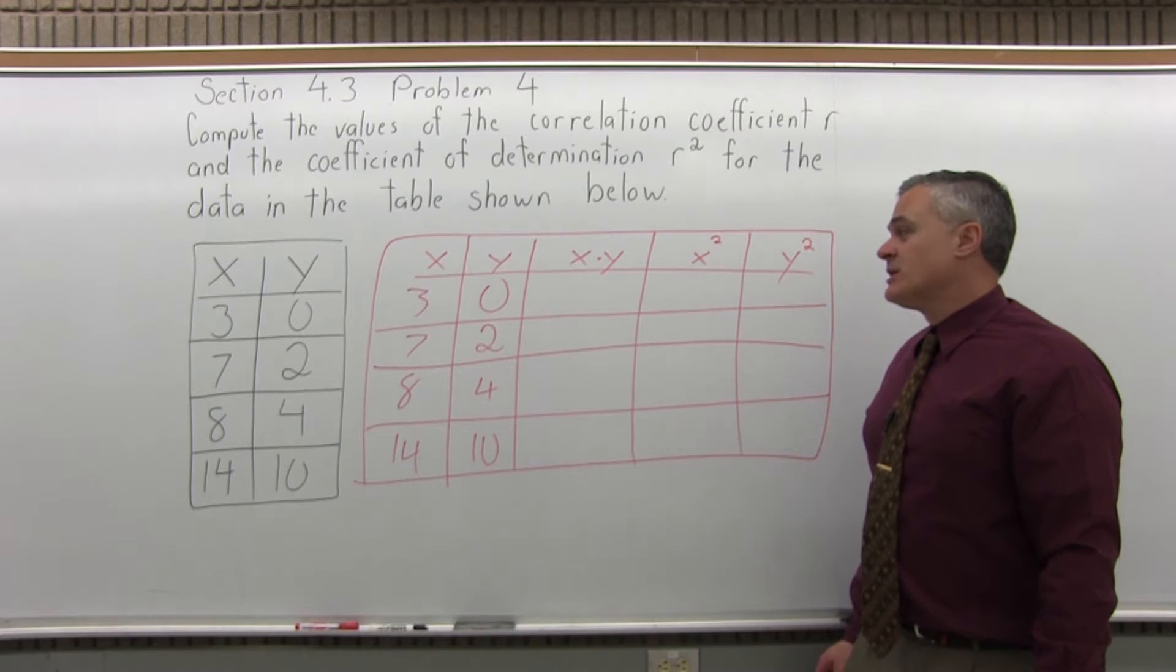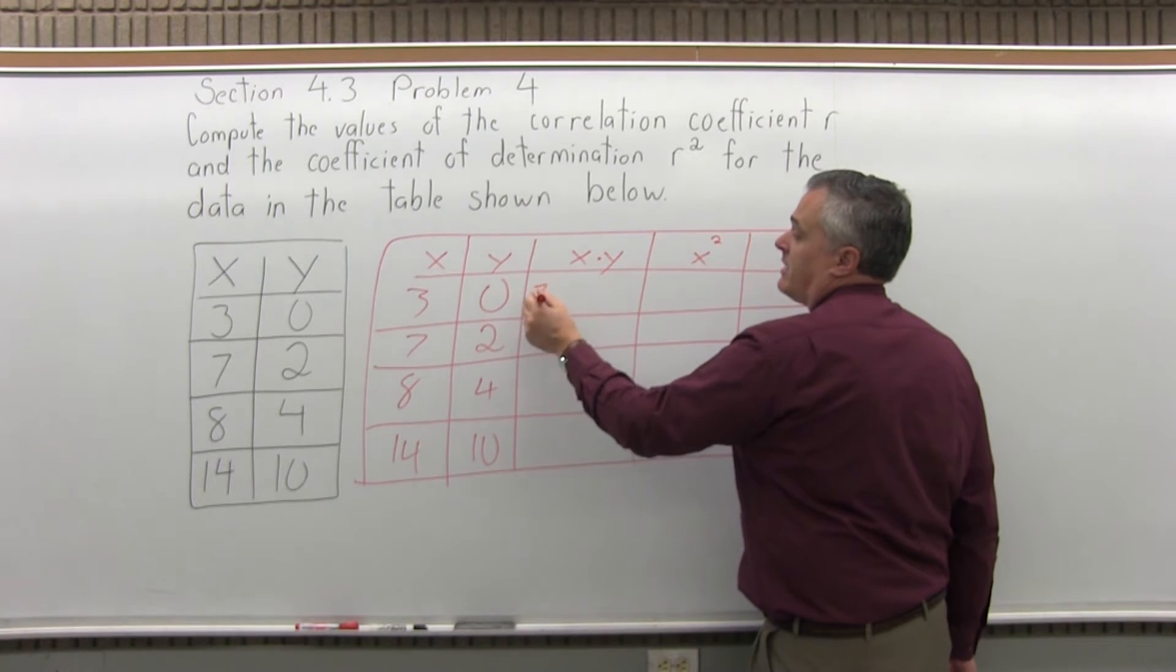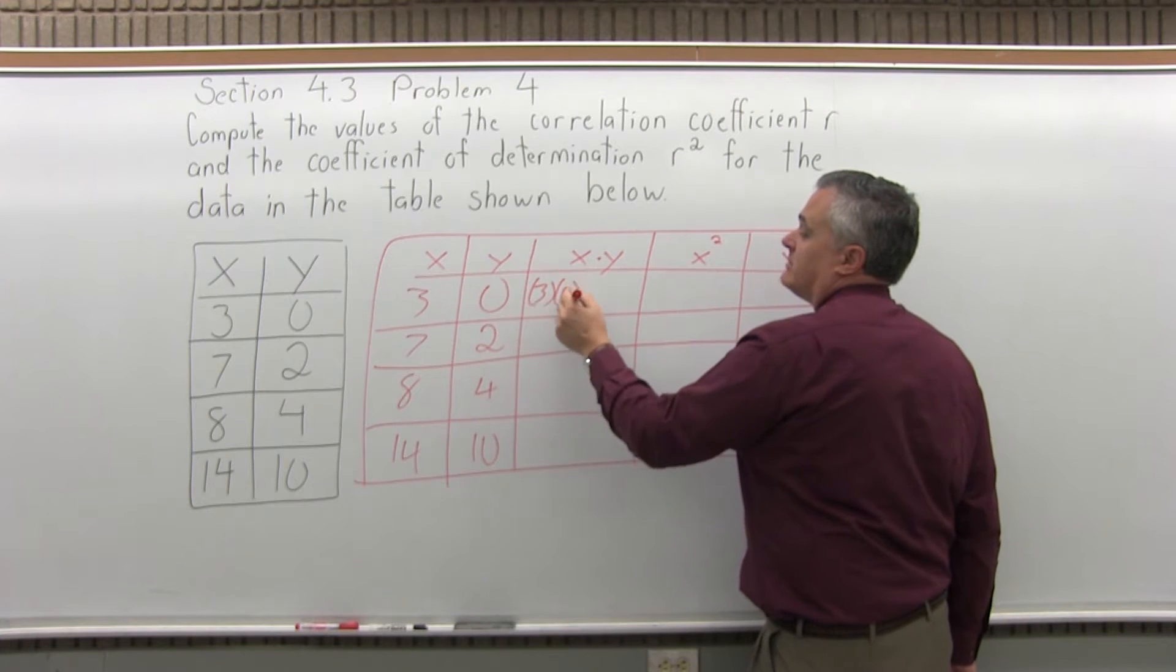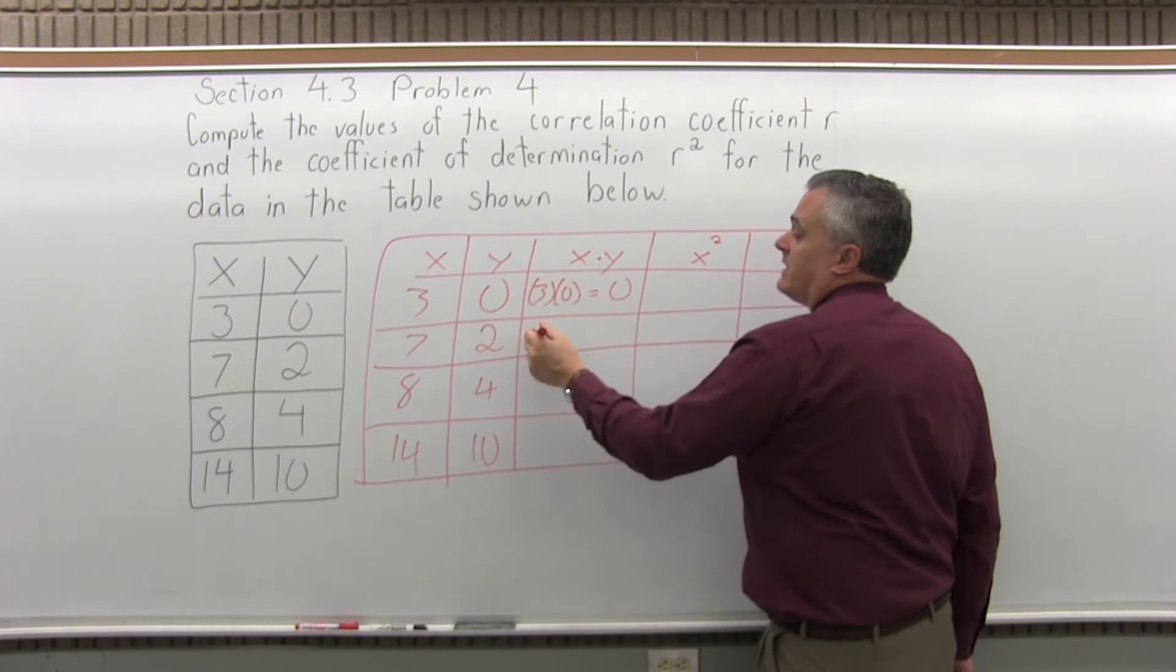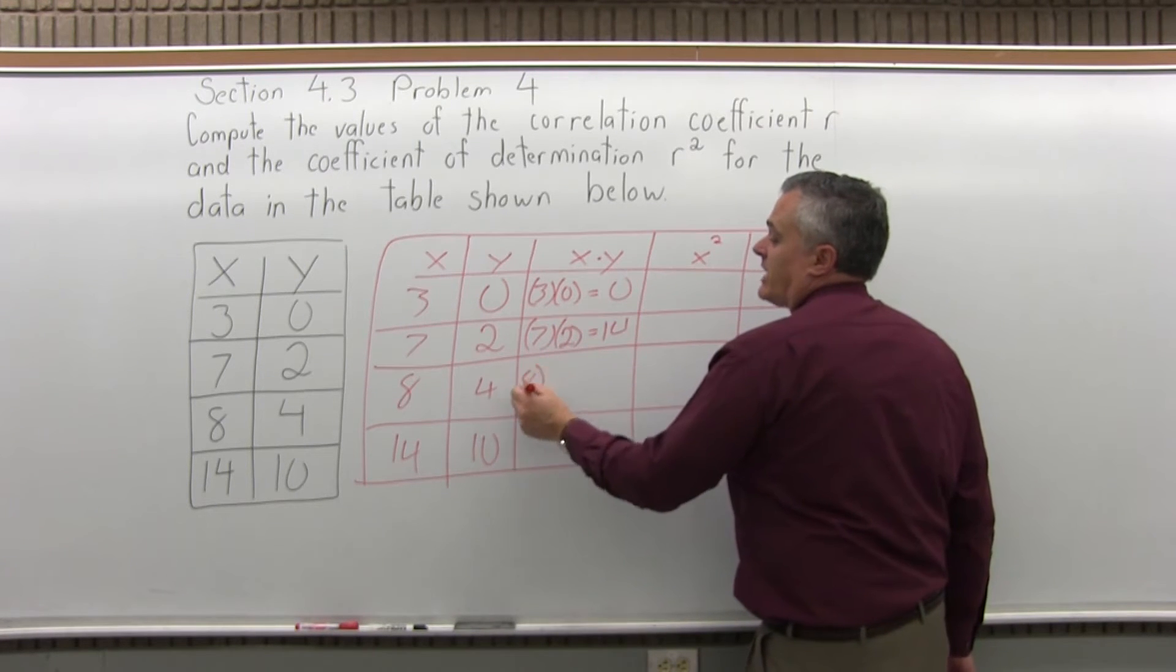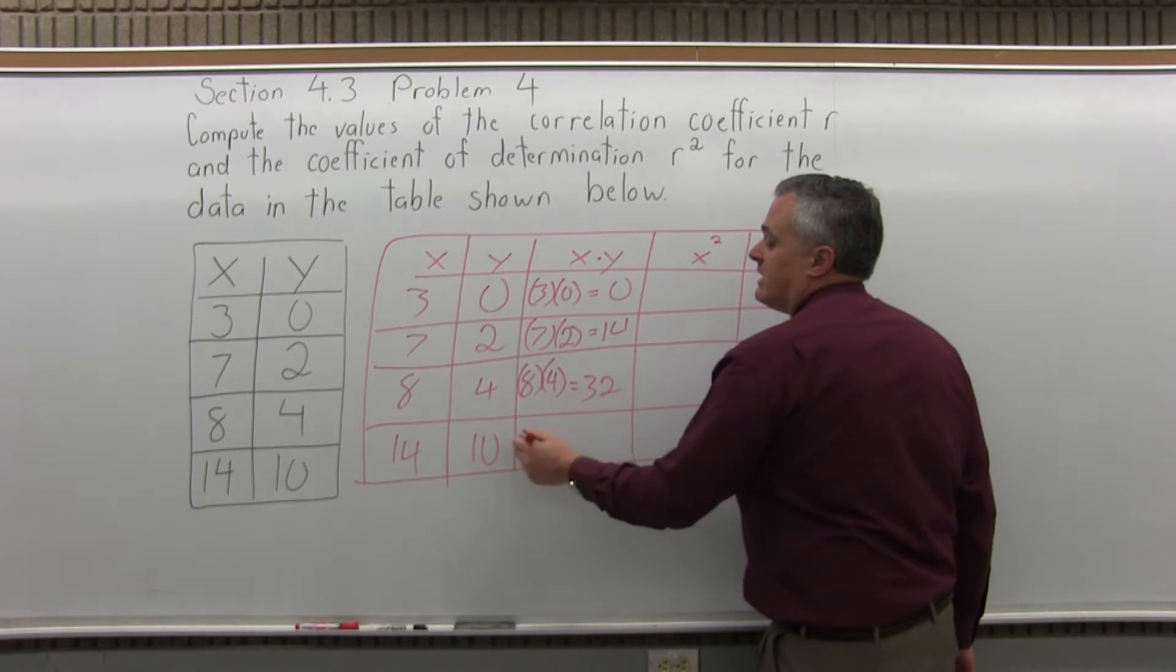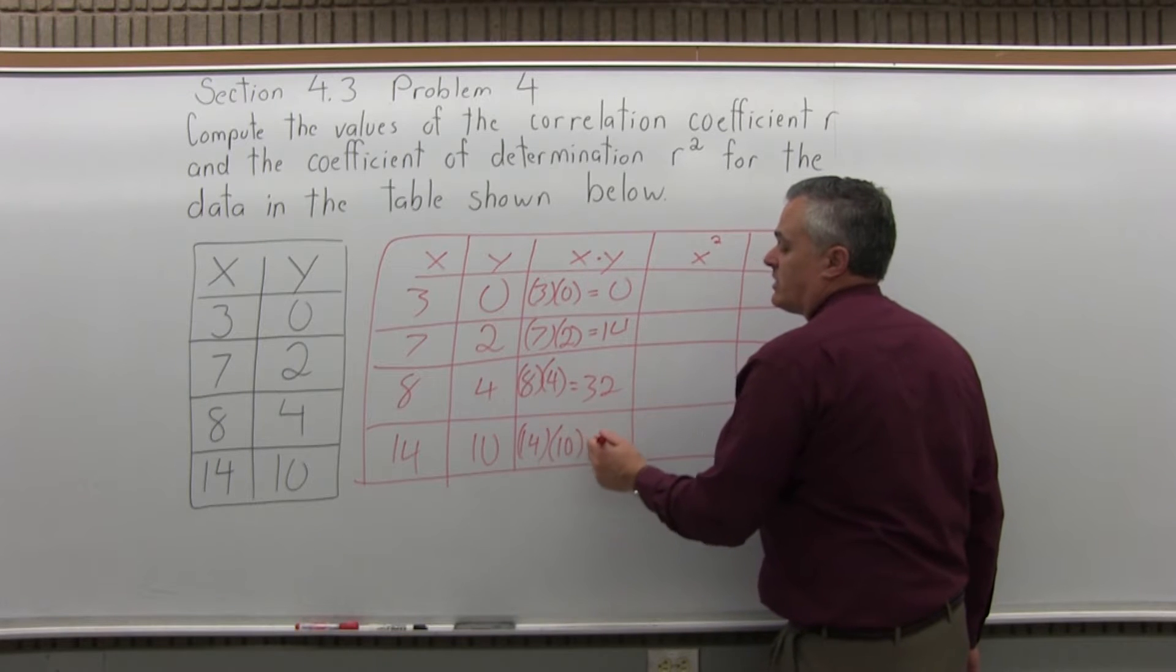Now the rest will involve some computation. For every row, do x times y. In the top row, x times y is 3 times 0, which is 0. In the second row, x times y is 7 times 2, which is 14. And the next row, x times y is 8 times 4, which is 32. And finally in the bottom row, x times y is 10 times 14, which is 140.